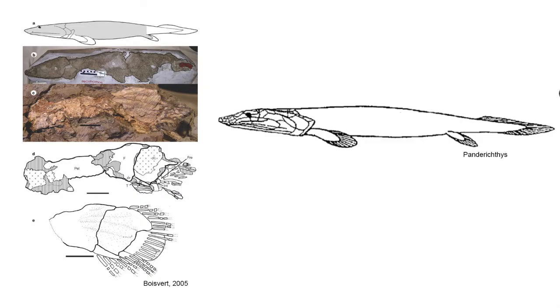The next fossil is Panderichthys, a late Devonian advanced sarcopterygian fish from Latvia. The skull of Panderichthys is flattened, with the eyes oriented on the top of the skull. Panderichthys lacks the dorsal and ventral fins, with only the pelvic and pectoral fins. It is thought that Panderichthys was a nearshore fish which used its flattened head to prey on insects that lived along the shoreline.